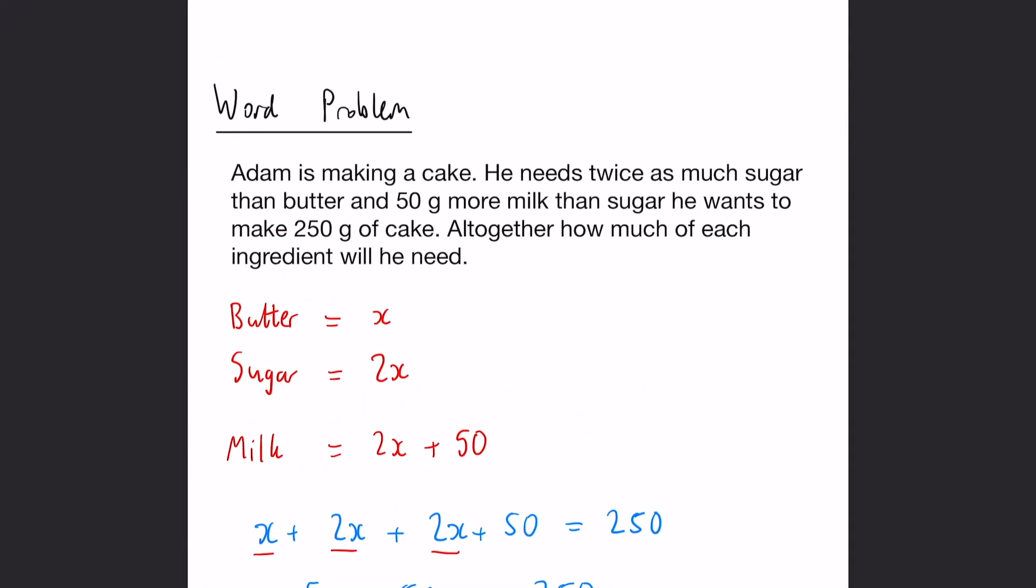So if we go back to the question, it's asking us how many of each ingredient will we need. So if x is 40, that would be that. Sugar, 2x must be 80. And then 2x plus 50 would be 80 plus 50. That is 130 grams of each of those ingredients.